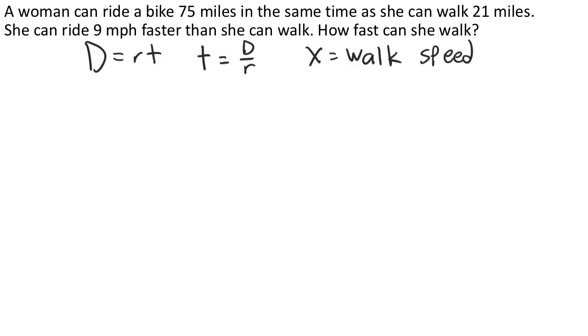From this, we can also come up with an expression for her biking speed, because we know that she bikes 9 miles per hour faster than she walks. And so if x is her regular walking speed, then x plus 9 is going to be her bike speed.